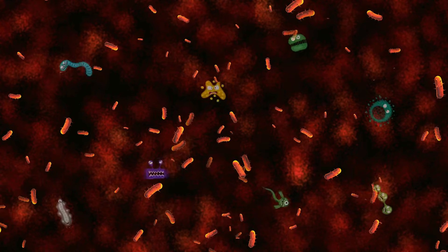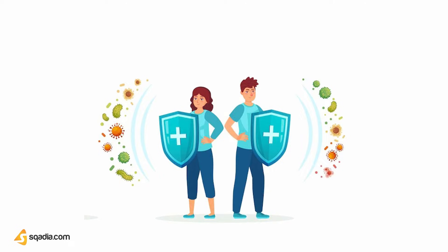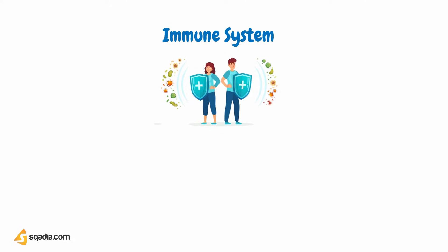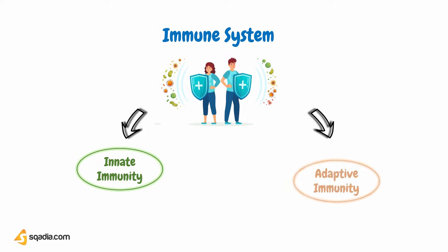We all know that we inhabit a world dominated by microbes, where many of them can cause harm. But nature has prepared our body to fight against these harmful microbes by none other than our body's immune system. The immune system is the body's primary defense system against invasion by microbes. Our body's immune system is organized into innate and adaptive components.